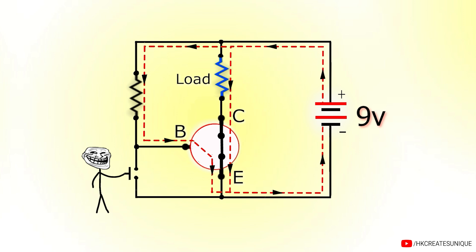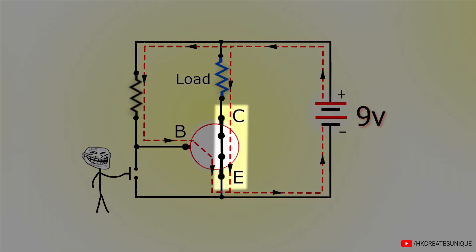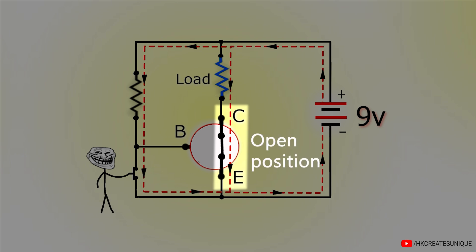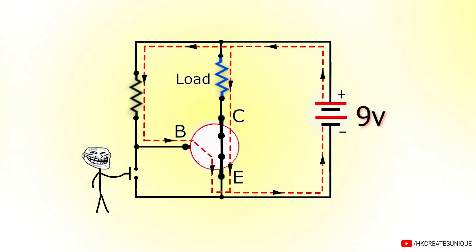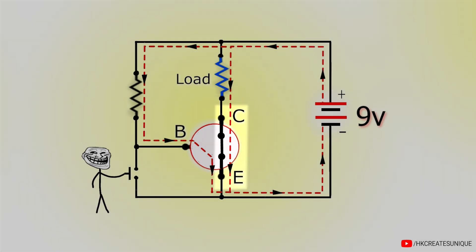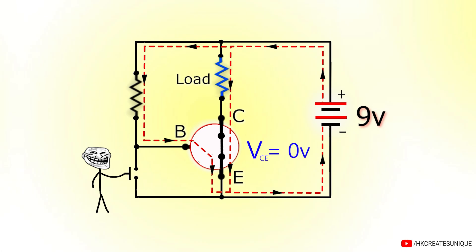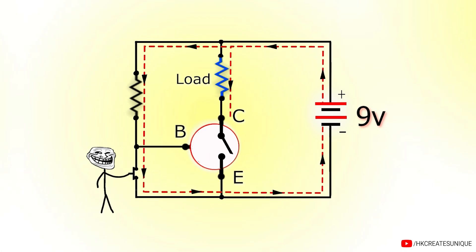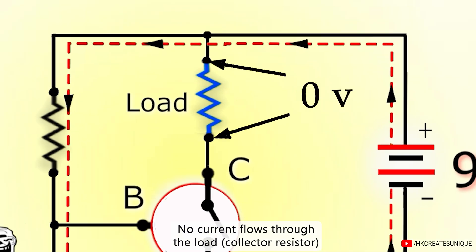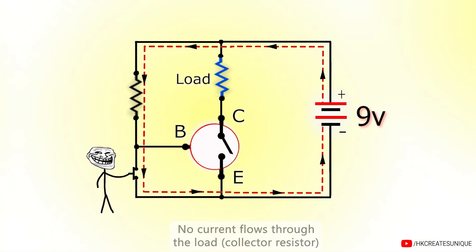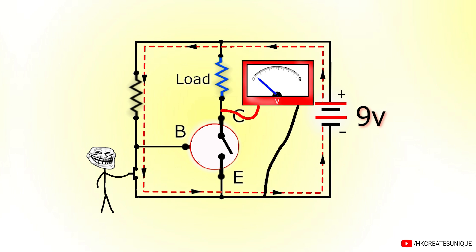When the transistor is in the closed position, the collector is shorted to the emitter, so the voltage between collector and emitter is 0 volts. At open position, since no current flows and hence there is no voltage drop across the collector resistor, the whole supplied voltage appears between collector and emitter.